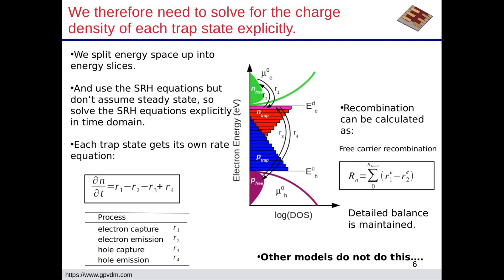And I said for each one of these states, basically, we write a capture and escape equation. So we have electrons coming into it, holes, electrons escaping, and then recombination happens through holes getting trapped into it or holes escaping. And so we basically are solving one of these equations explicitly for each energy step. So each one of those bars, we solve a capture escape equation for.